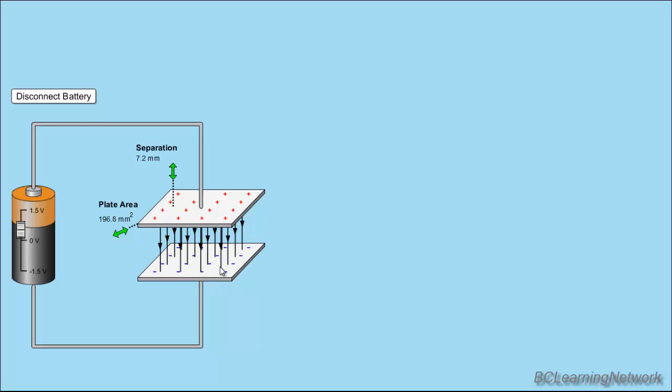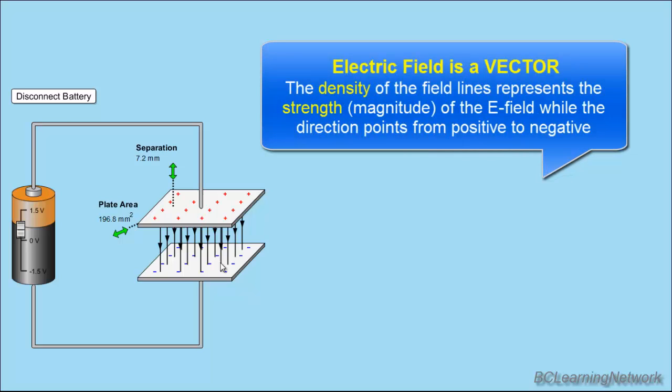Now, just to remind you guys, one thing about electric field lines, the density of the electric field lines, how many you actually see per centimeter or per square centimeter, tells you the strength of the electric field. And the direction is obviously the direction of the arrowhead themselves.